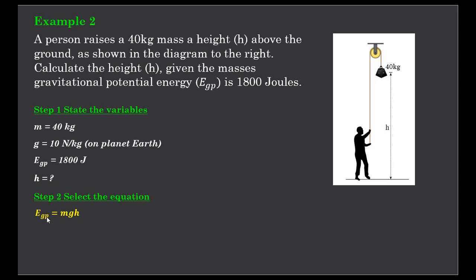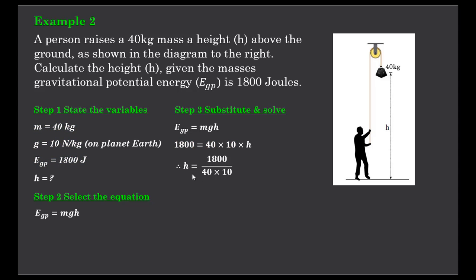The equation: EGP equals MGH. Substituting our values in — 1800 is the gravitational potential energy, mass is 40, gravitational field strength is 10, and H is the unknown. H is simply 1800 divided by 40 times 10. We move the multiplications across to the denominator, giving us a height of 4.5 metres. So to achieve 1800 joules of gravitational potential energy, a 40 kilogram mass must be raised to a height of 4.5 metres.